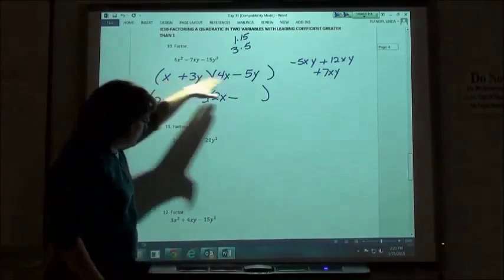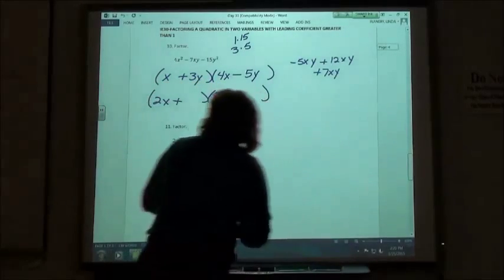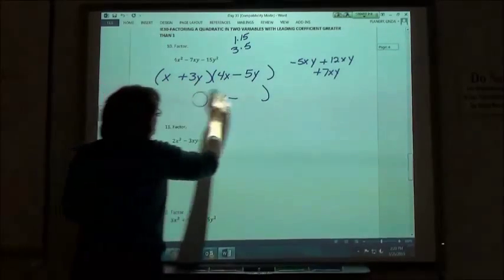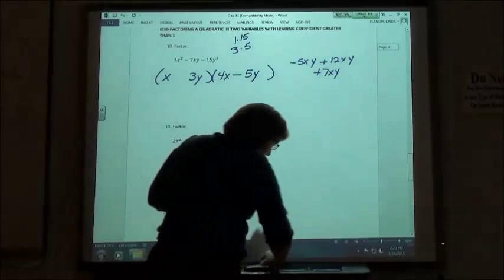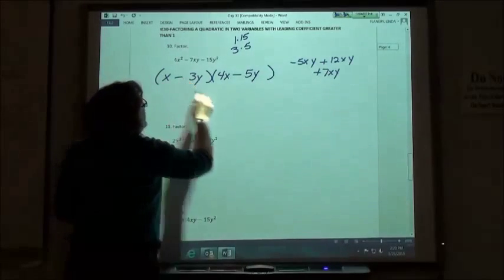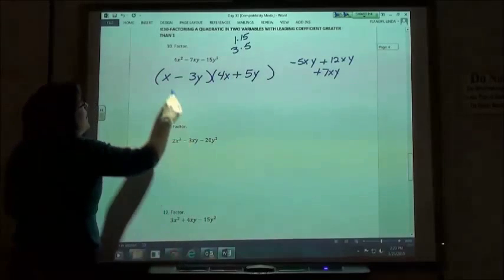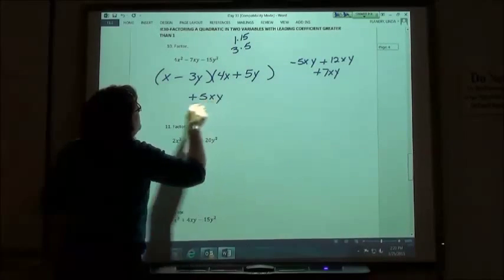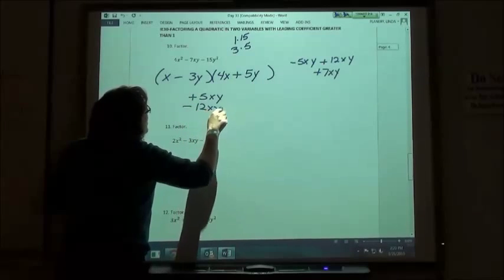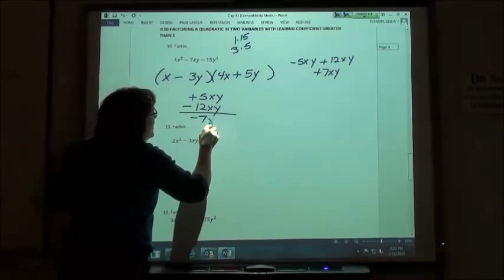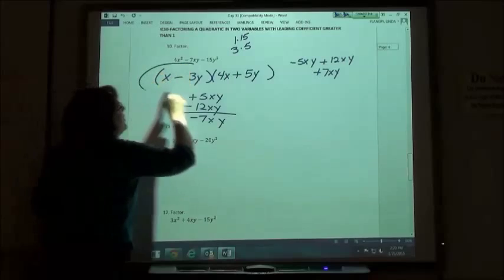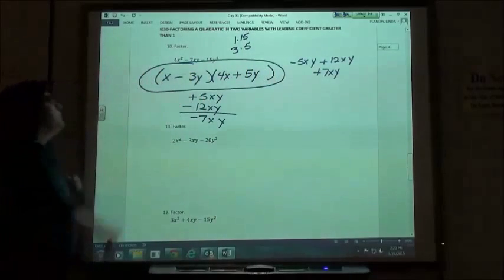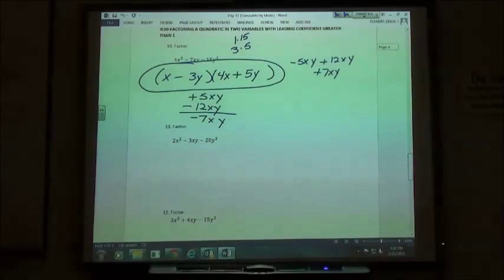So this tells me that's the right pair. However, I just need to fix my signs. So we're going to make this one the negative, this one the positive, and so I would get positive 5xy minus 12xy, which then is my negative 7xy. And so x minus 3y times 4x plus 5y would be my answer.